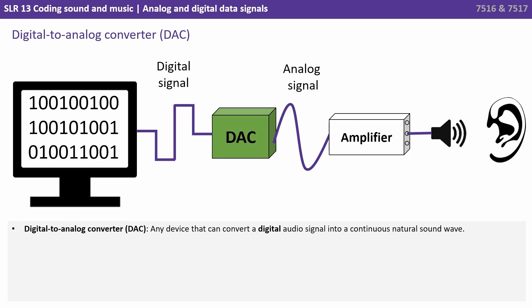Conversely, a DAC — a digital to analogue converter — is any device that converts a digital audio signal into a continuous natural sound wave.